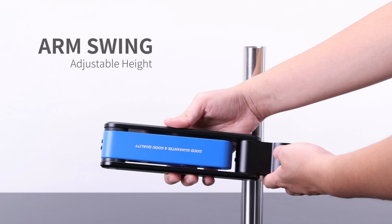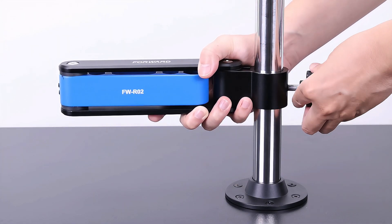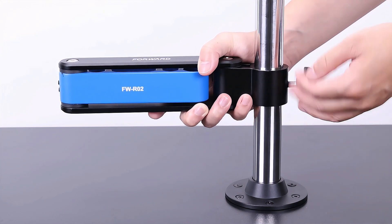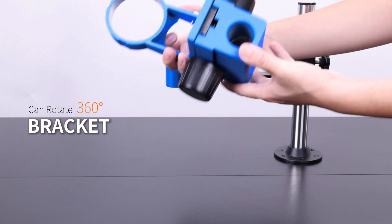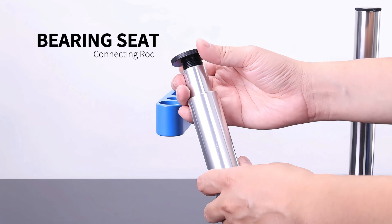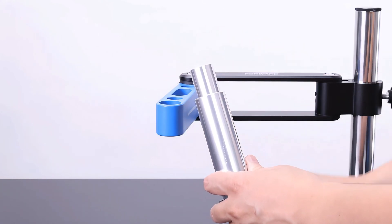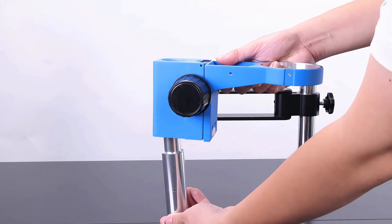Adjustable height, arm swing. Can rotate 360 bracket, connecting rod, bearing seat. Next, follow the video to install.